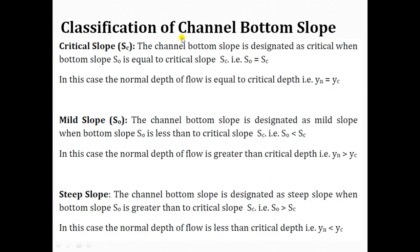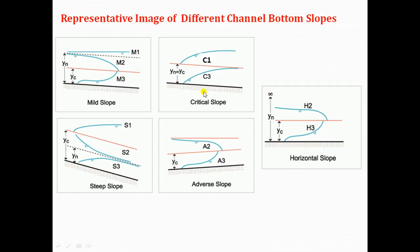Coming to the classification of channel bottom slope. The first one is critical slope. The channel bottom slope is designated as critical when S0 is equal to the critical slope SC. In this case, the normal depth of flow is equal to the critical depth. As seen in the critical slope channel diagram, when S0 equals SC, normal depth and critical depth are equal.